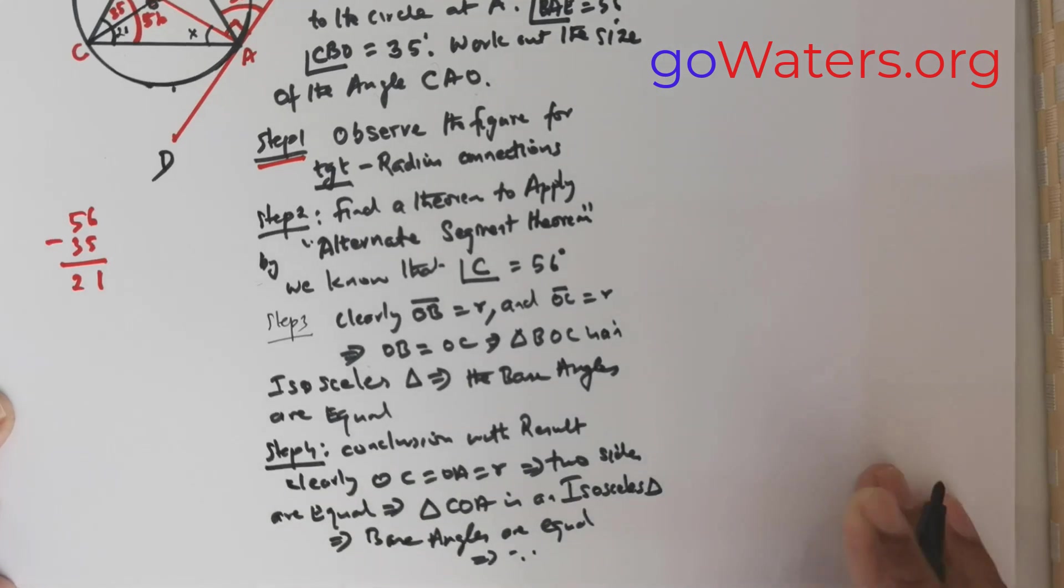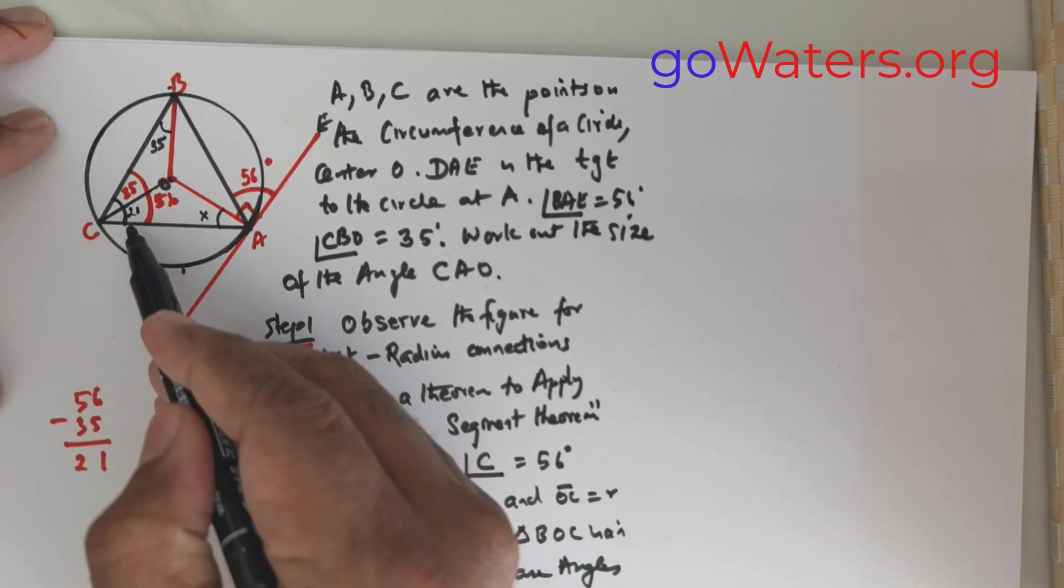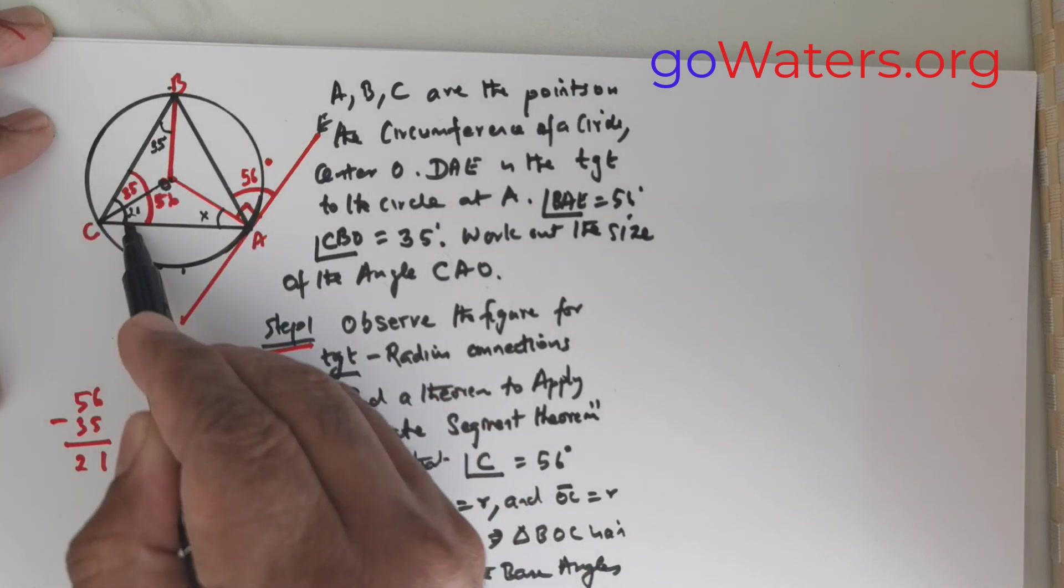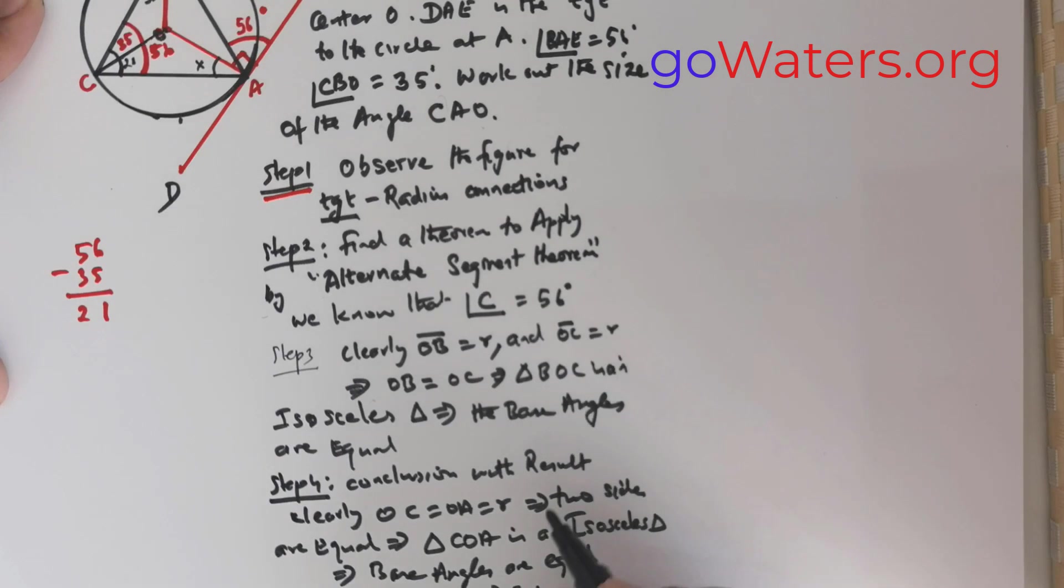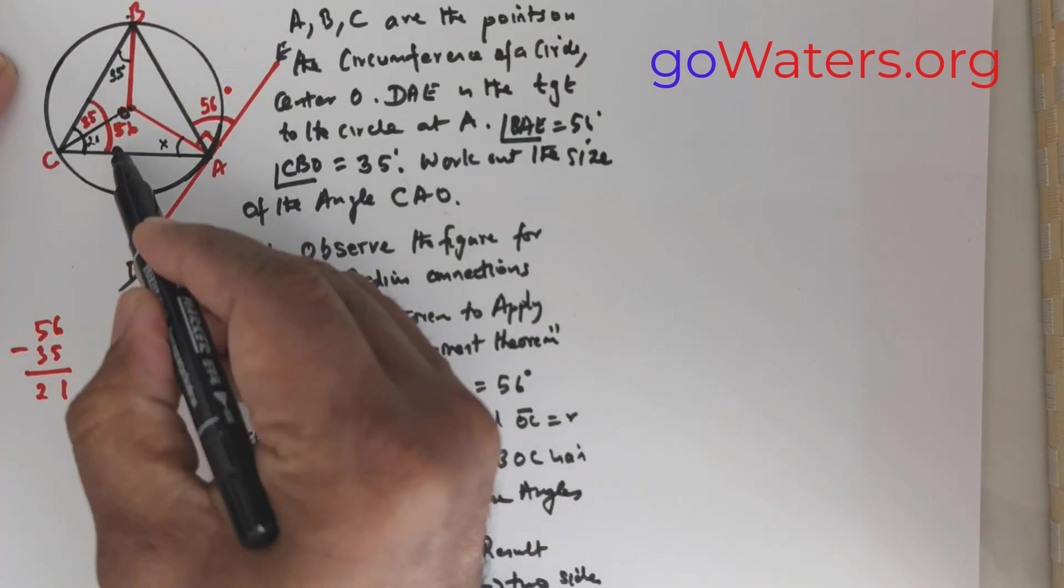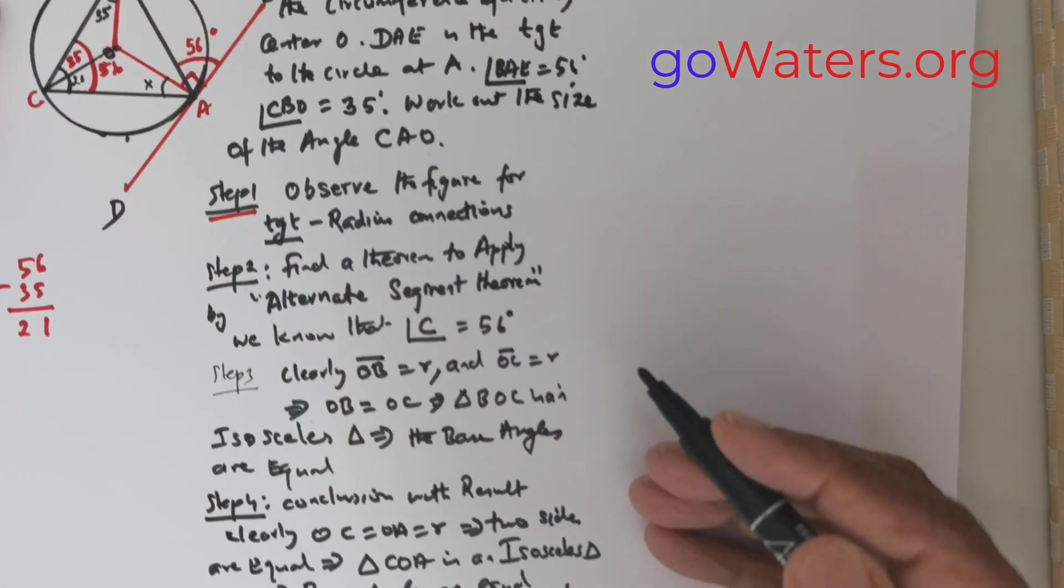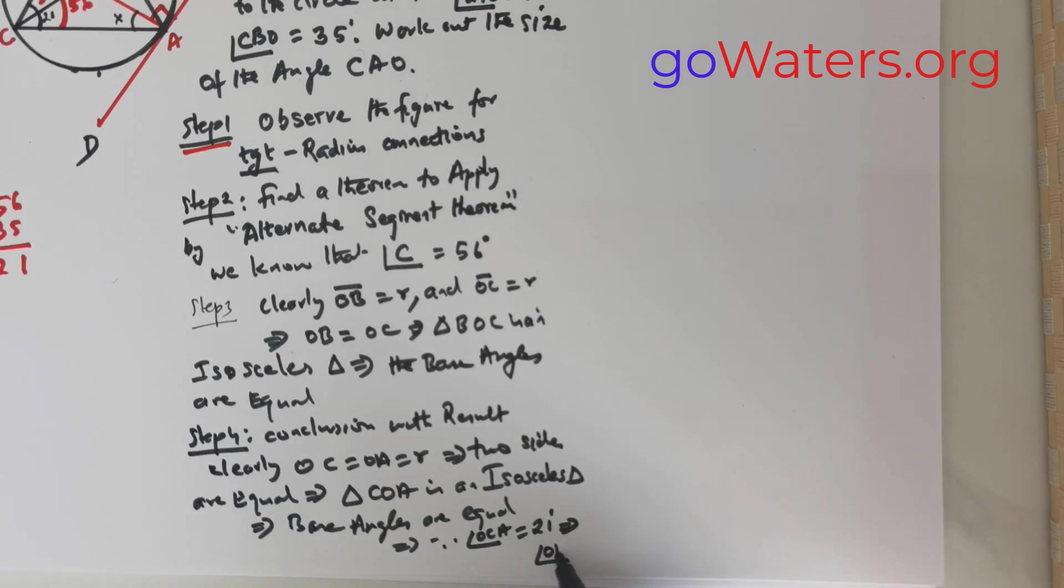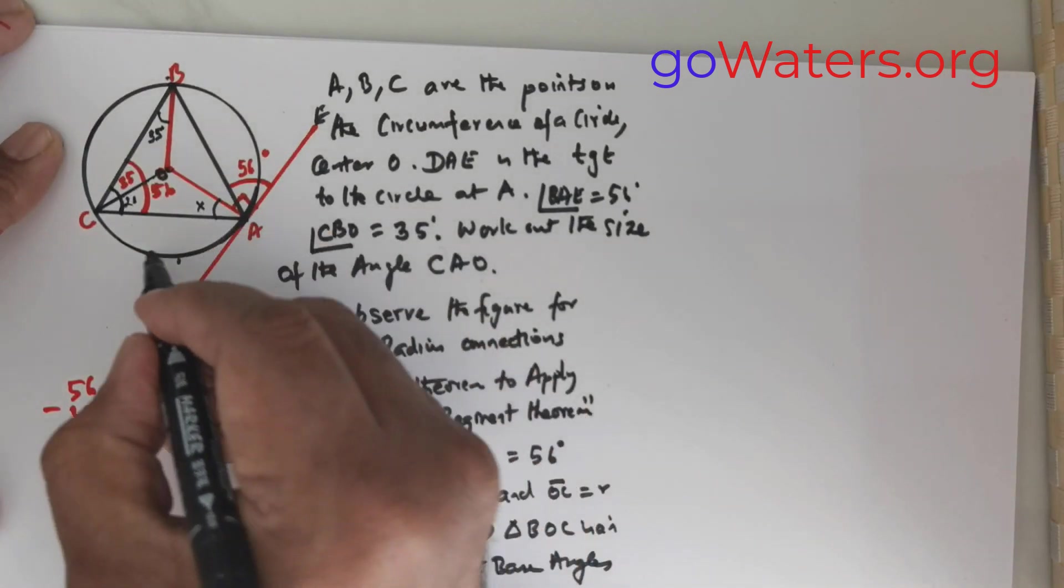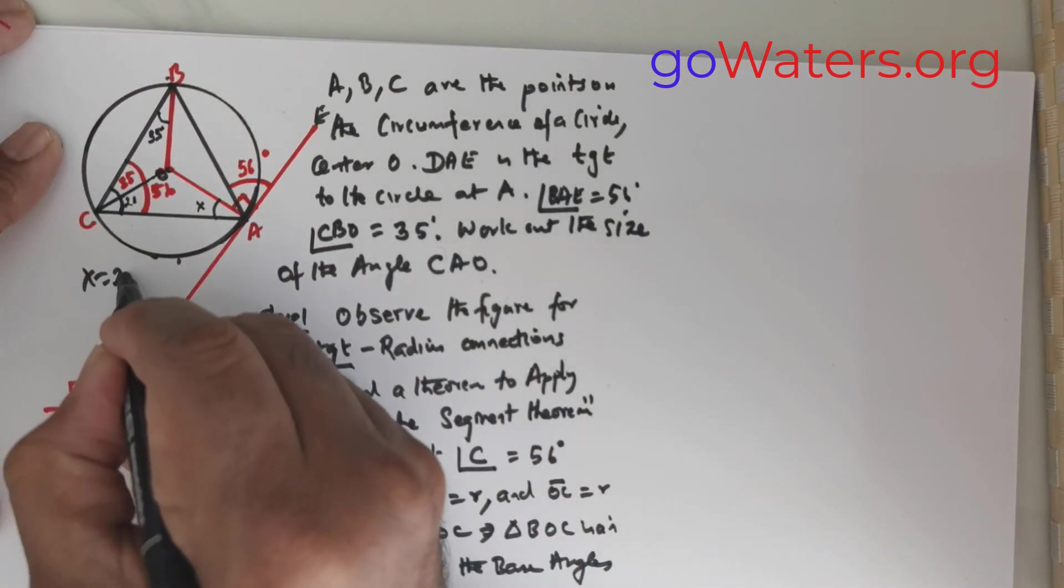So this in turn means since angle OCA is equal to 21, since angle OCA is equal to 21 degrees, this in turn means angle OAC will also be equal to 21. So this means X value is equal to 21 degrees. So clearly X is equal to 21 degrees.